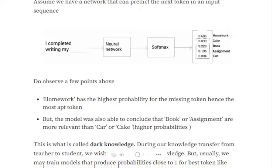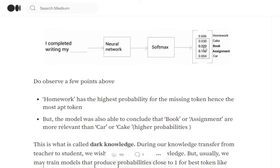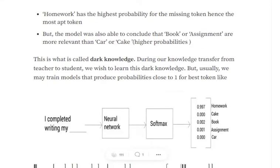There is some secondary knowledge present in the model called 'dark knowledge'. The model knows that 'homework' is the most apt token, but it can also distinguish among other possible tokens — if 'homework' were not there, 'book' would be the most apt token. The model is able to classify between all the tokens, not just one. Dark knowledge means there is secondary information in the network: even among unrelated tokens, the model can make sense of which are more or less related. During knowledge distillation, we are trying to transfer this dark knowledge to the student network.